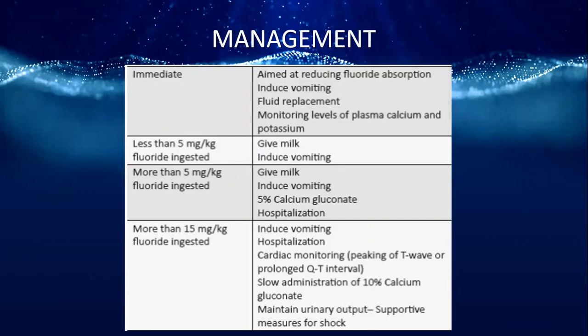5% calcium gluconate helps bind the fluoride. For ingestion more than 15 mg/kg, induce vomiting, hospitalize, and perform cardiac monitoring — a peaking of T-wave or prolonged QT interval may be noticed. Slow administration of 10% calcium gluconate is used to reverse the process, along with maintained urinary output and supportive measures for shock.